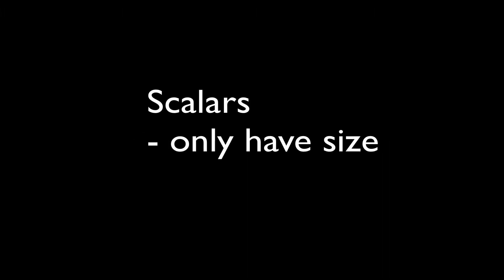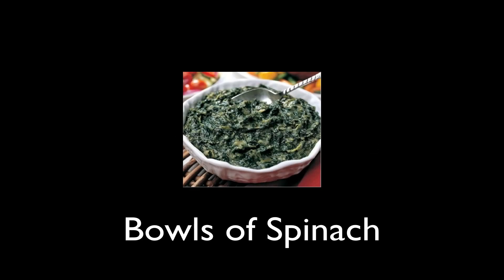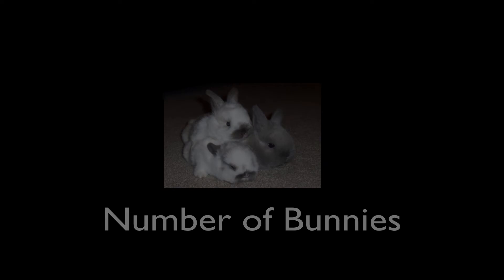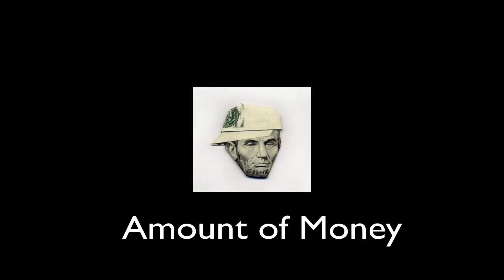In physics, we actually deal with two kinds of numbers. They're called scalars and vectors. Scalars are numbers that only have size. Some good examples: bowls of spinach, numbers of bunnies, or the amount of money somebody has in their bank account are all numbers that we call scalars.